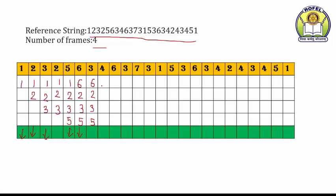Then 3 — 3 is already in the memory, no page replacement, so no arrow. Then 4 — 4 ke liye vapas se page replacement karna hai. The frames are 6, 2, 3, 5 and we need to find the victim page.